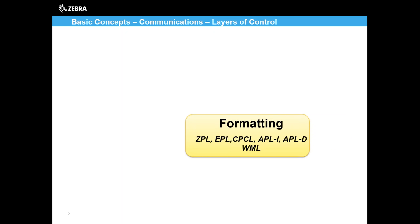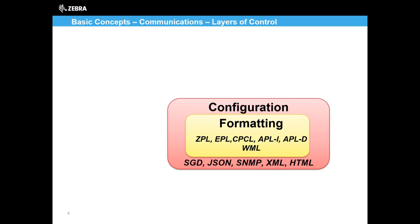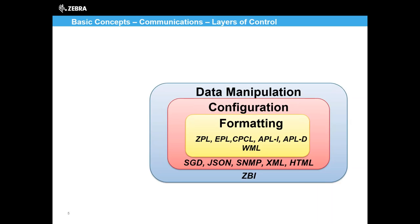To go into more detail about formatting control languages, there are layers of control. ZPL is what we consider a formatting language — there are several within the printer — and their main focus is creating and executing the actual print job. Then we have configuration languages: Set Get Do, JSON, or SNMP — these handle setup like wireless control, print language settings, and print speed.